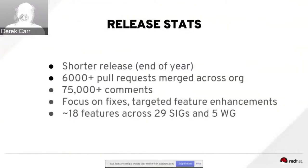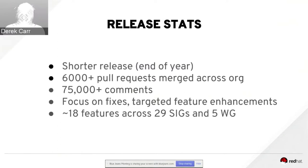So what's new in Kubernetes 1.9? Pulling together some stats — this was a shorter release since the Q4 release is always compressed due to Thanksgiving and Christmas holidays. What impressed me is that across all pull requests merged across the entire Kubernetes organization, there were 6,000-plus pull requests and approximately 75,000 comments across pull requests and issues. The focus of the 1.9 release was largely on stability and targeted graduation of particular features.